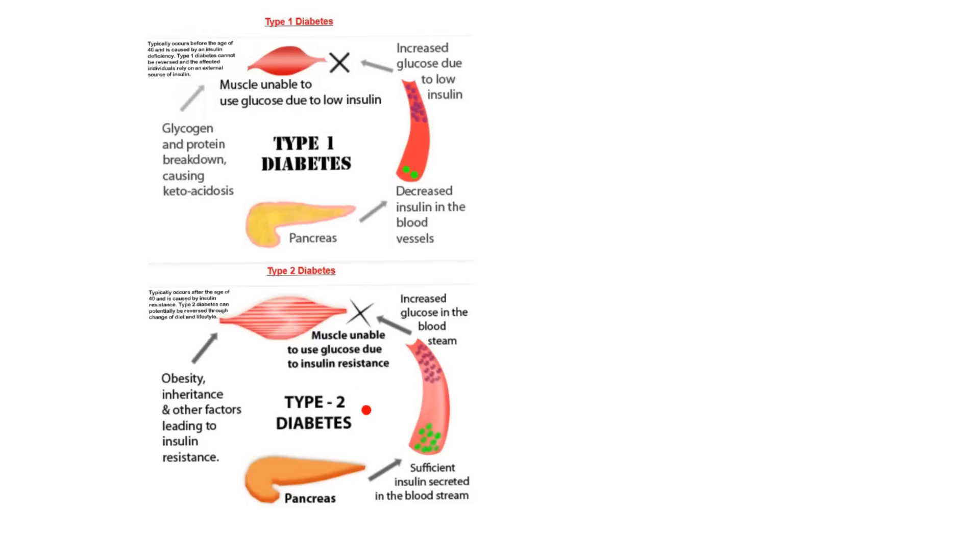So then the muscles are unable to use glucose because they really aren't taking in the glucose because there's not enough insulin. Now on type two diabetes, we have sufficient insulin. So there's plenty. This is in the blood. There's plenty of insulin. But there's a resistance. There's insulin resistance. Muscle is unable to use glucose because of insulin resistance. And you end up with also increased glucose in the blood. By the way, if you get increased glucose in the blood, there's also increased glucose in the urine. Now on this side for type one, sometimes if you break down these proteins and glycogen too much, you have what's called ketoacidosis. That's a clinical sign. On type two, it says obesity, sometimes times your genes, whatever genes you get from your parents, and other factors can lead to resistance.